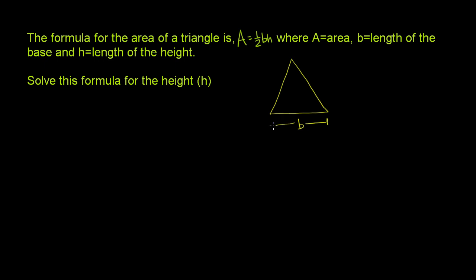So this distance right over here is b. And then this distance right here is our height. That is the height of the triangle. Let me do that in a lowercase h, because that's how we wrote it in the formula.